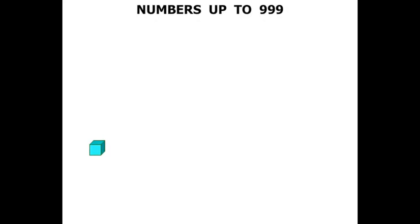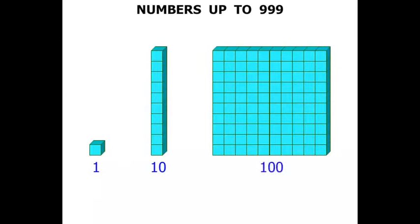This one here, referred to as a short, is worth 1. Then we have 10 of these. We refer to this as a long. It is worth 10, 10 little cubes. This one here is worth 100. It is made up of 100 little shorts. We will refer to this as a flat.